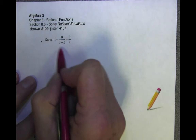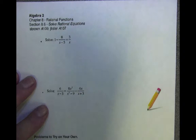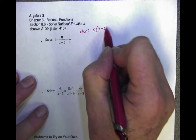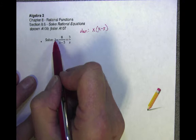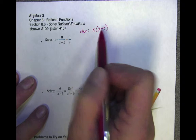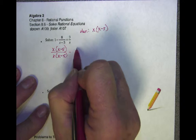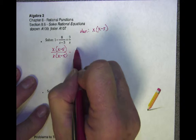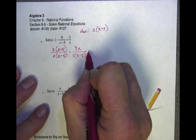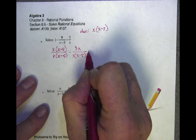Once again we have another rational equation, and we need to find the lowest common denominator. Our LCD is going to be x times (x minus 5). I need to multiply the first fraction top and bottom by (x minus 5), the second by x, and the third by (x minus 5). So I rewrite: x(x minus 5) over x(x minus 5), minus 8x over x(x minus 5), equals 3(x minus 5) over x(x minus 5).